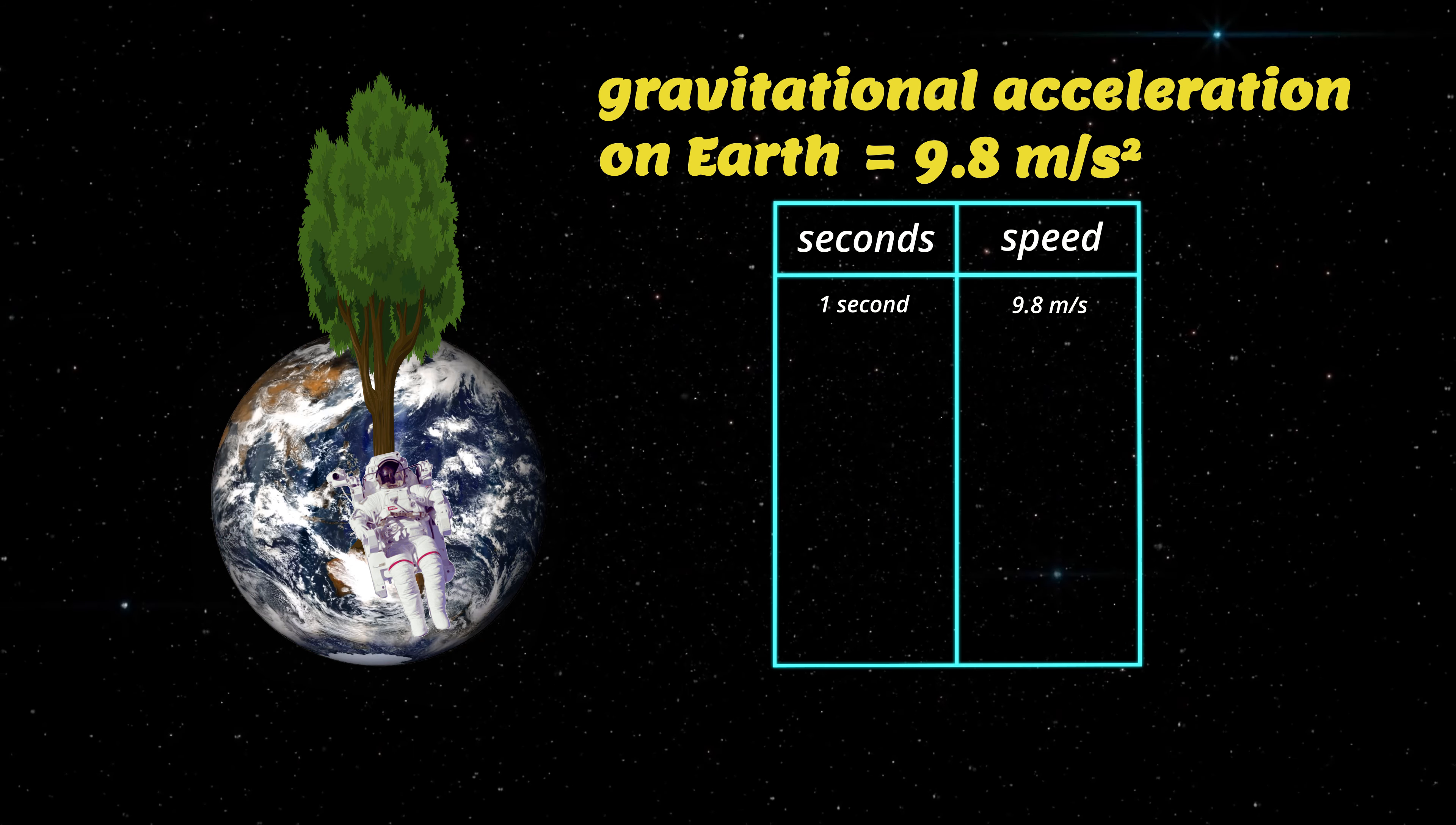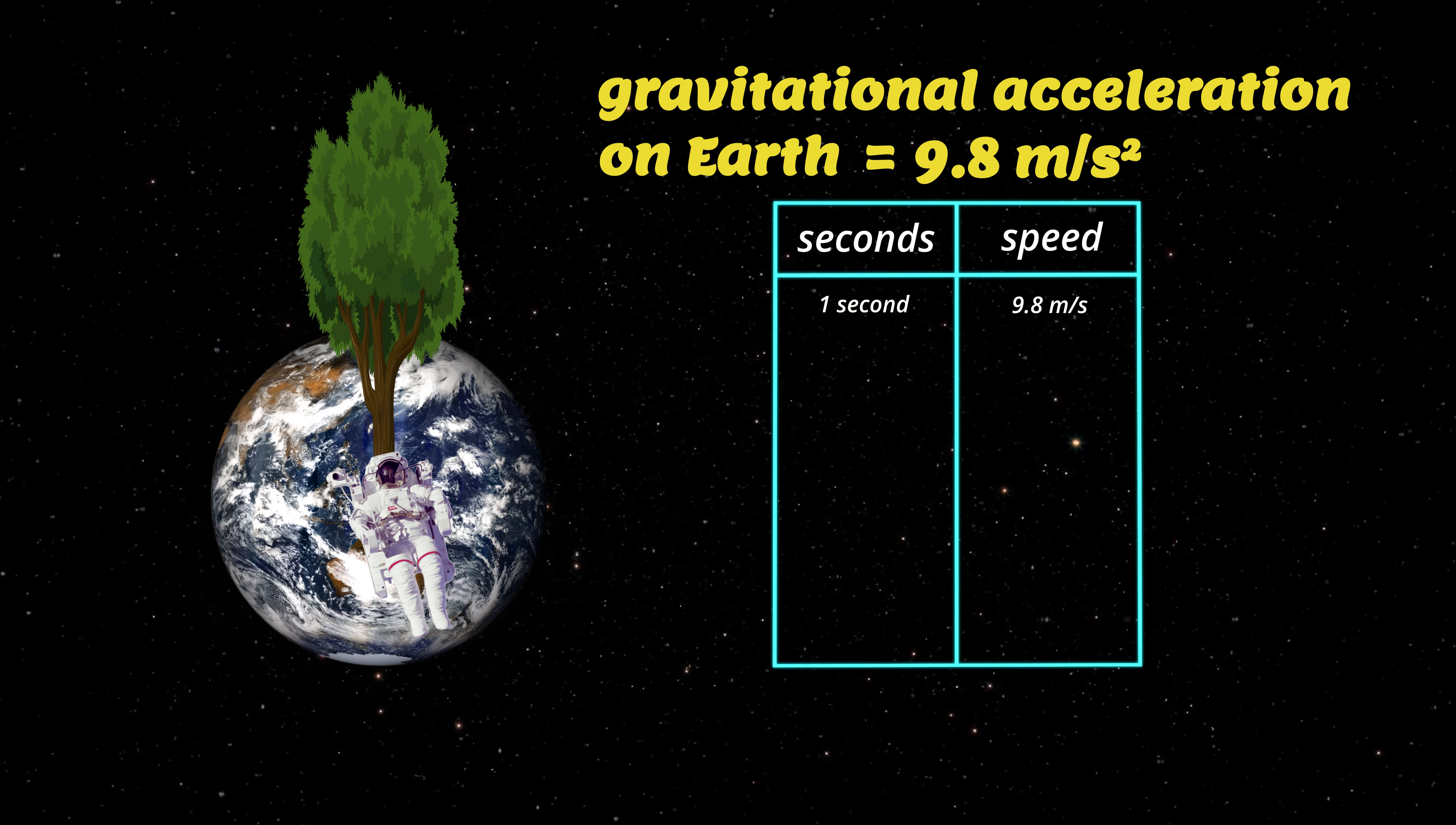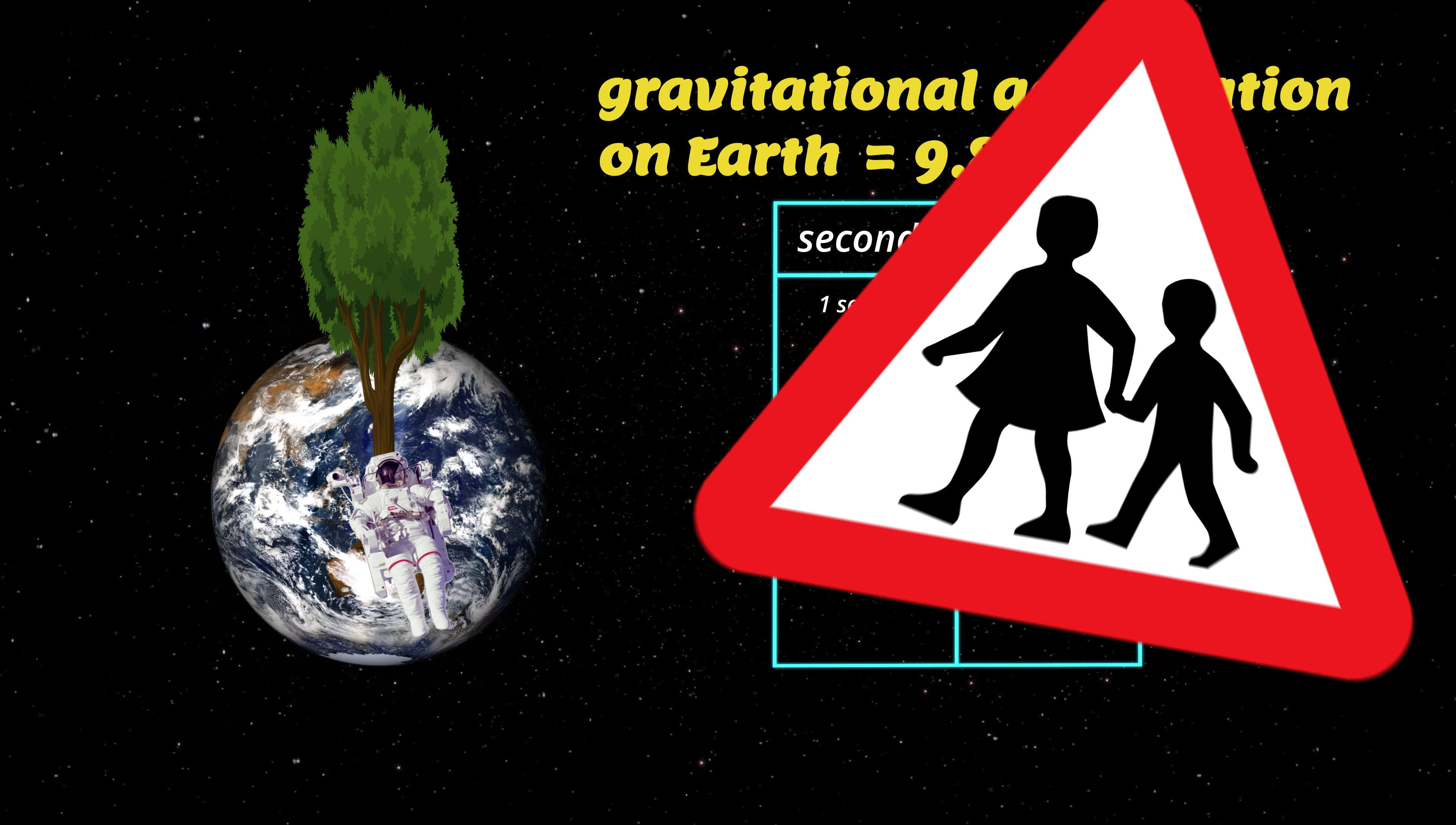In the first second that she falls, her speed will be 9.8 metres per second. That's about 35 kilometres per hour, the speed inside a school zone.